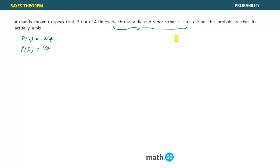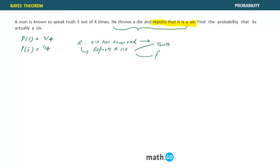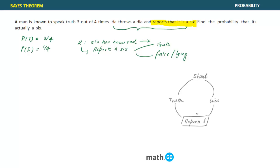The event that has already occurred is that he has reported six. There are two options: either he is telling the truth or he is lying. Let's draw the ALGO flow diagram. At the start, he has two options - speak truth or lie - and either way, the event is that he reports a six.